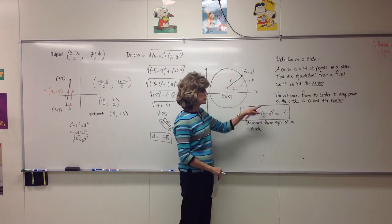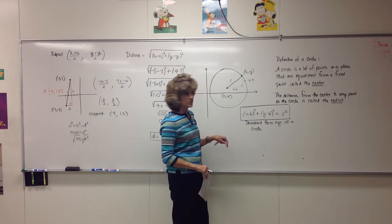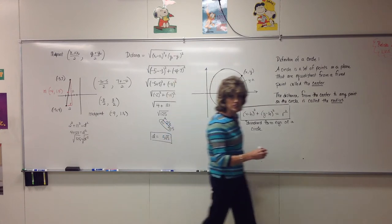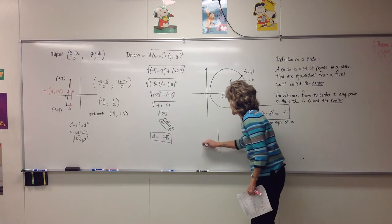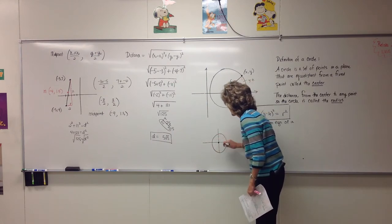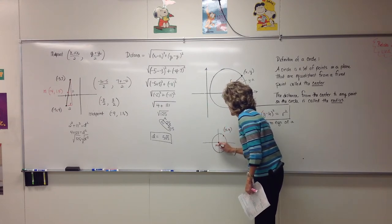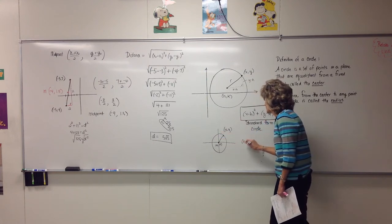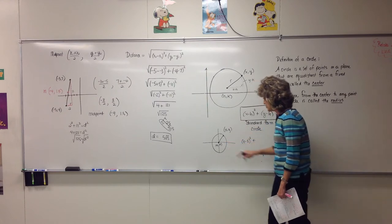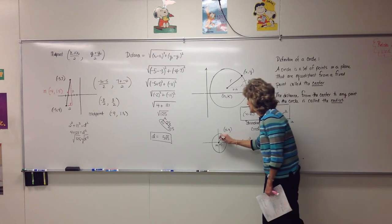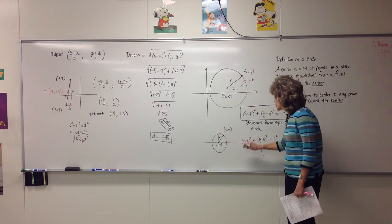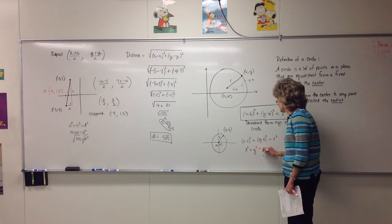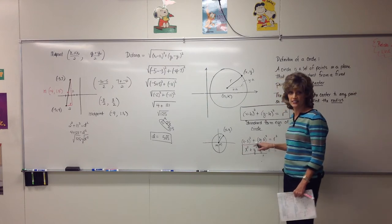If you need the radius, just take the square root of both sides. This is the standard form equation of a circle that has its center at h, k. If the center is at 0, 0, then the equation becomes x minus 0 squared plus y minus 0 squared equals r squared. But this is a special case where the center is at the origin.